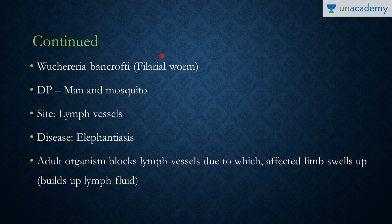The next important round worm that infects humans is Wuchereria bancrofti, also known as the filarial worm. It has two hosts: man and mosquito — mainly the female Culex mosquito, though it may also be transferred by Anopheles and other mosquitoes. The adults live in the lymph vessels of human beings.